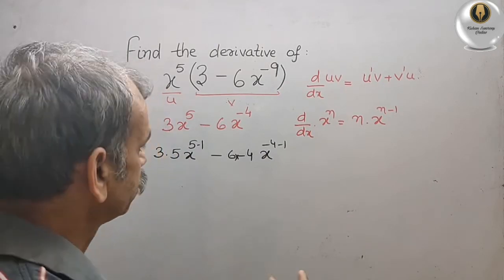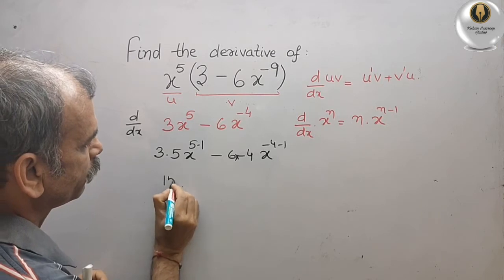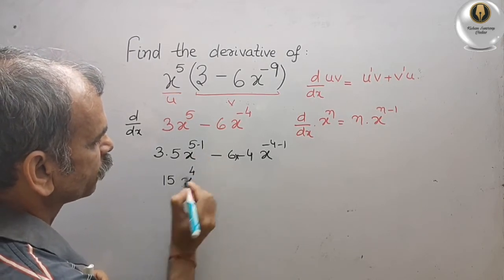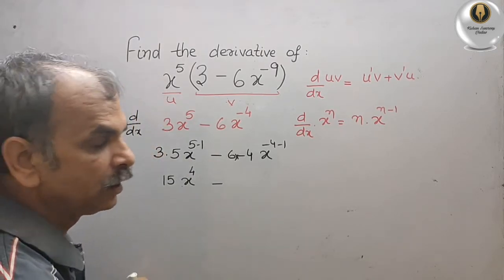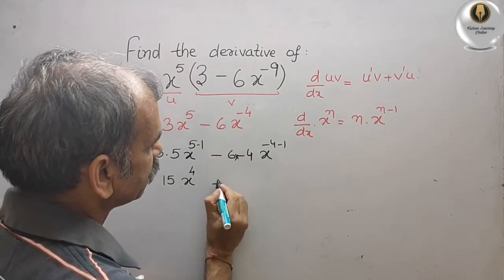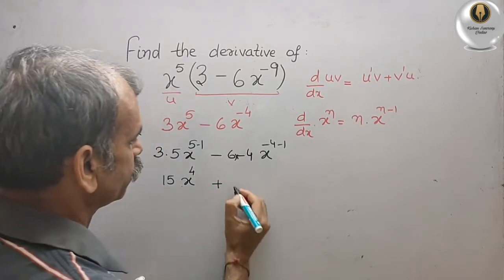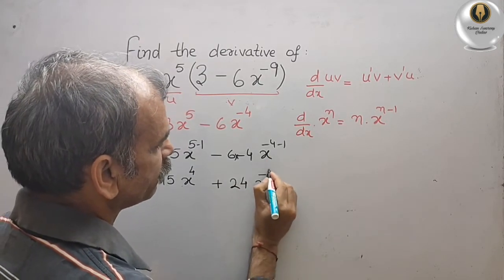Now you can solve it. 3 into 5 is 15, x to the power of 5 minus 1 is 4. Minus. Now here minus into minus is plus. 6 into 4 is 24, and x to the power of minus 5.